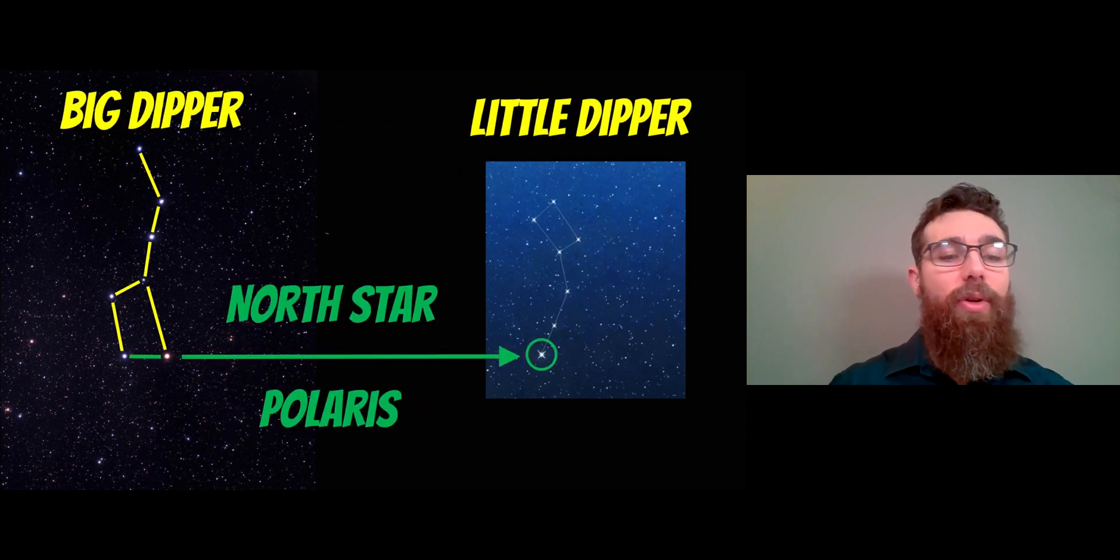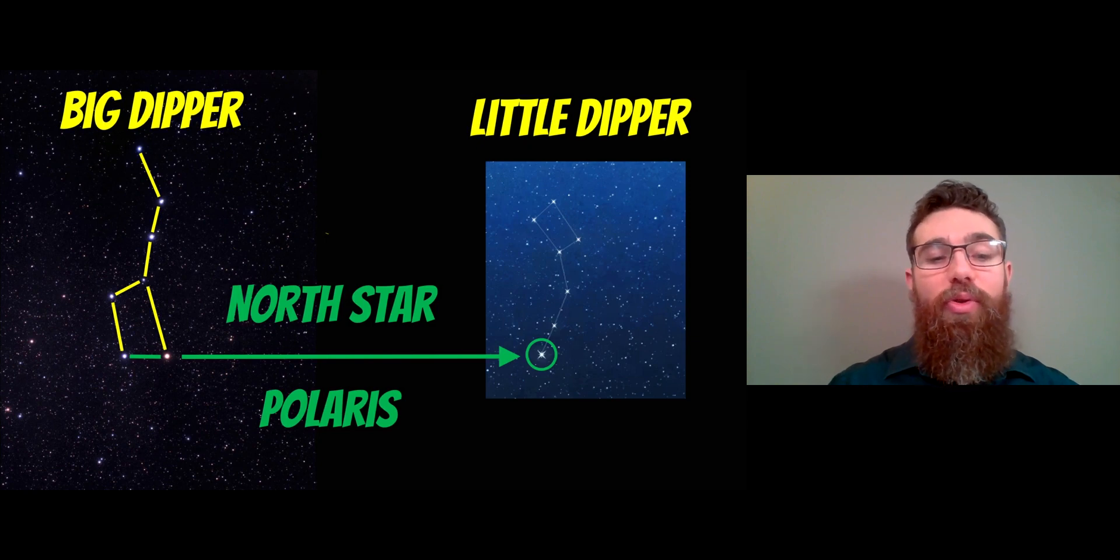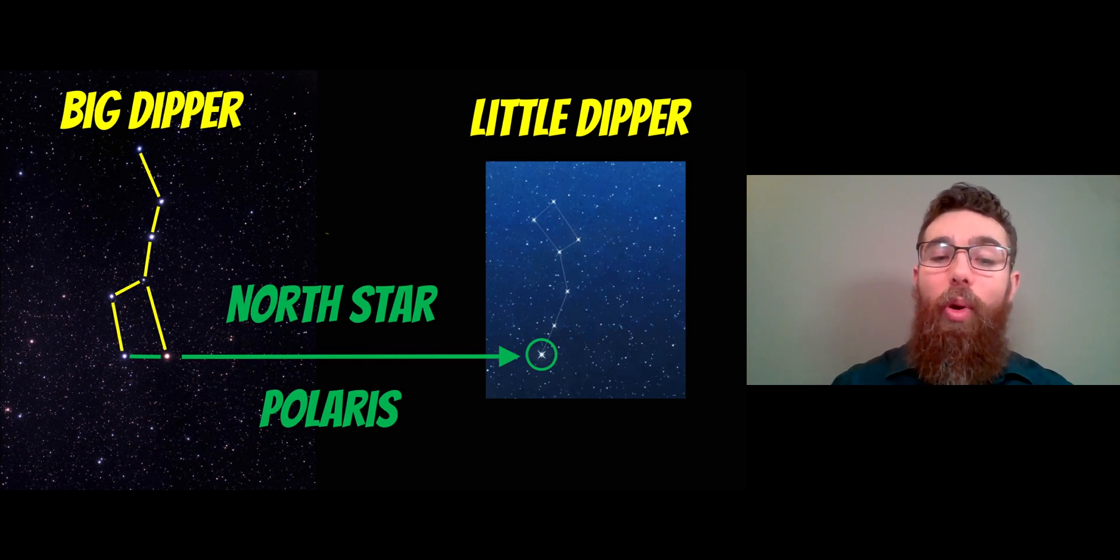If we take the two stars at the end of the Big Dipper, the end of the saucepan, we draw an imaginary line between the two and then carry on towards the Little Dipper. It will point directly to the North Star or Polaris, and it's actually the end star of the handle on the Little Dipper. So it's fairly easy to find.